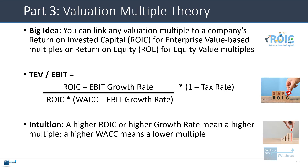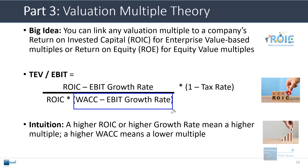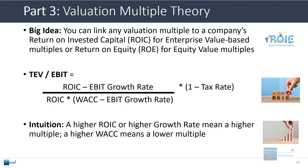At a high level, this says that if a company is growing more quickly, it should trade at a higher multiple. And if its WACC is higher, it should trade at a lower multiple. When ROIC increases, the numerator goes up by more than the denominator, so the multiple rises. When the growth rate increases, the denominator shrinks more than the numerator changes, so the overall multiple goes up. And when WACC is higher — say 15% versus 10% — the denominator is larger, so the multiple is lower.